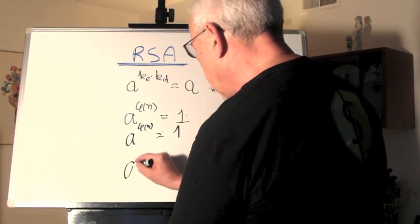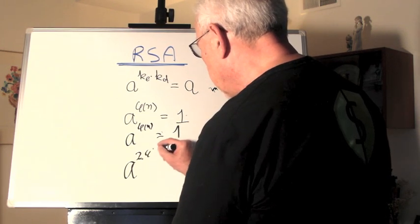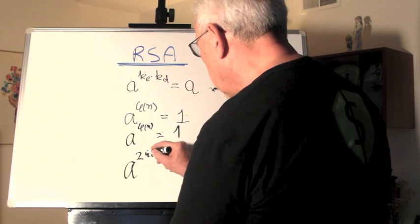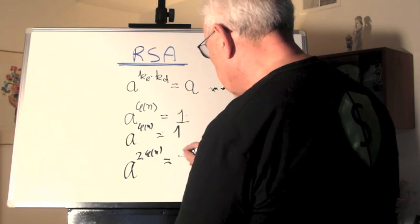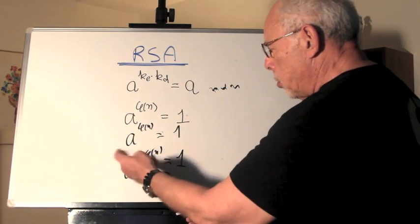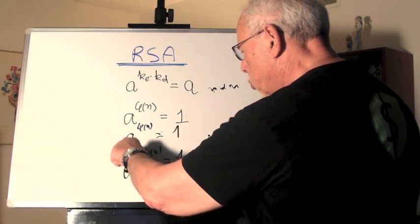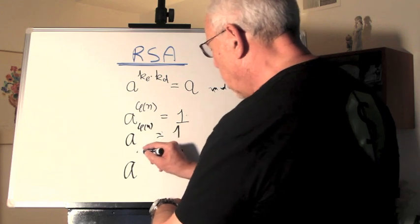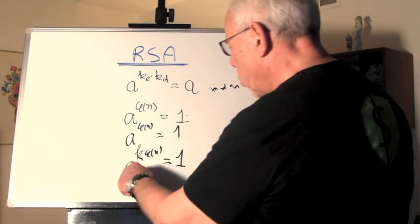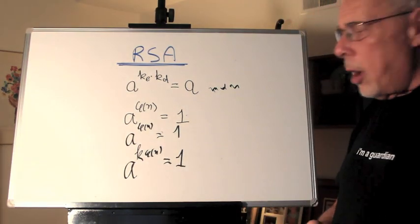then we can write this equation again, A to the power of phi N also equals 1 and multiply it. So, we get what? A to the power of 2 phi N equals 1 times 1 is 1. But it doesn't have to be 2. It can be any number. So, it can be a K.